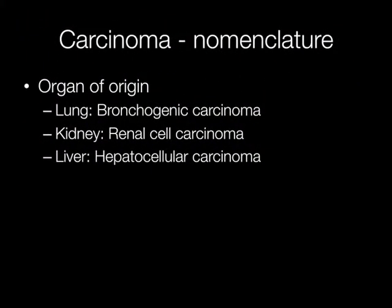Carcinomas may also be subdivided according to the organ of origin. So a bronchogenic carcinoma arises in the lung, renal cell carcinomas arise in the kidney, and hepatocellular carcinomas arise in the liver.